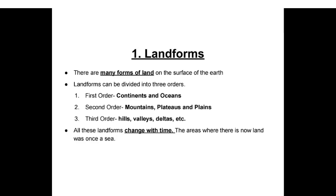Welcome to Premier UPCIS. Continuing with the geography class, this is part two of world geography. Geomorphic processes and landforms: there are many forms of land on the surface of the earth. Landforms can be divided into three orders — first order: continents and oceans; second order: mountains, plateaus and plains; third order: hills, valleys, deltas, etc. All these landforms change with time.